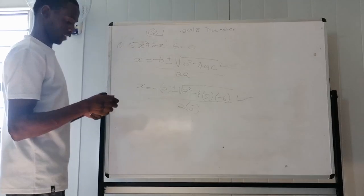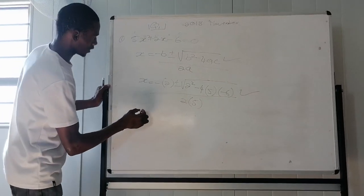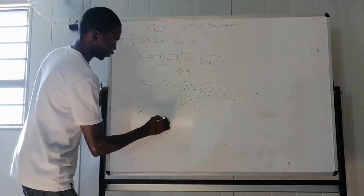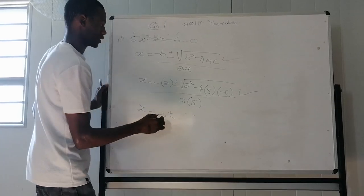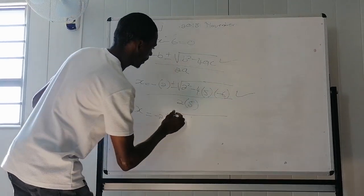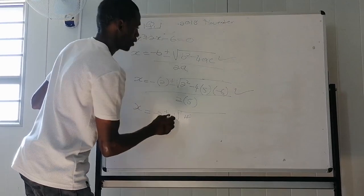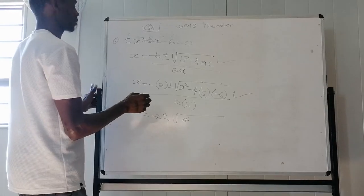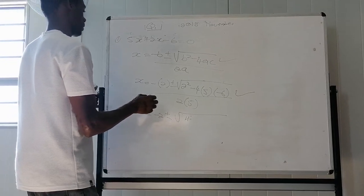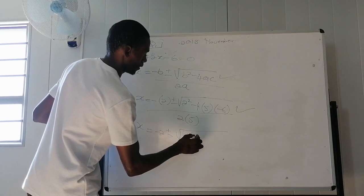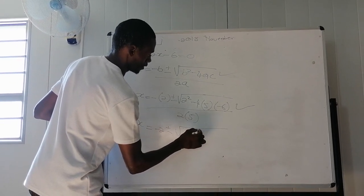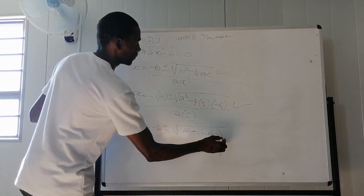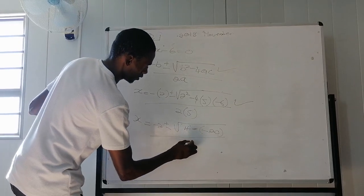But now, I don't have a calculator guys. I forgot my calculator. So if you have a calculator with you, you can substitute everything. Then you will get an answer. But now, because I don't have a calculator, I'll just say x is equal to negative 2, plus or minus, this is 4, 4 times 5 is 20, 20 times 6 is 120 guys. Remember, negative into negative, 120, all over 10.